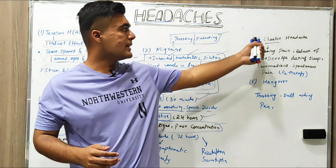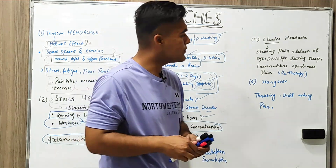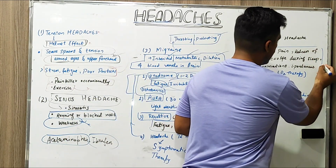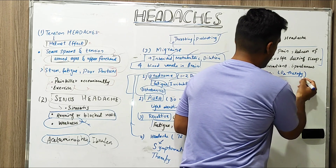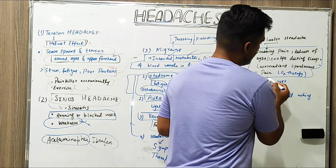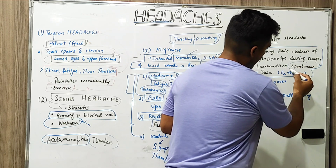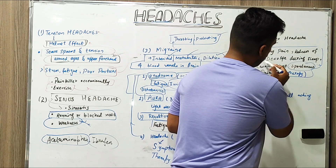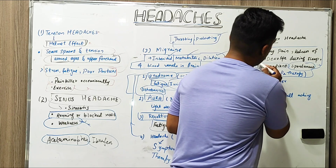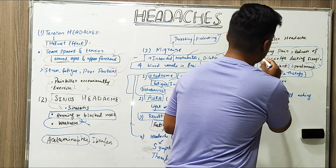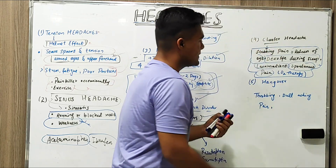The fourth form is cluster headache. The word is showing its weight — cluster headache involves stabbing pain and redness around the eye, lacrimation, and spontaneous pain. Symptoms include lacrimation, redness of the eye, and pain that can develop during sleep.